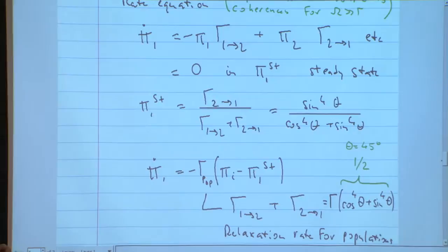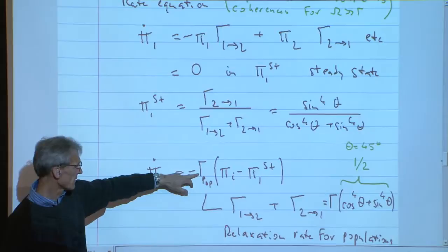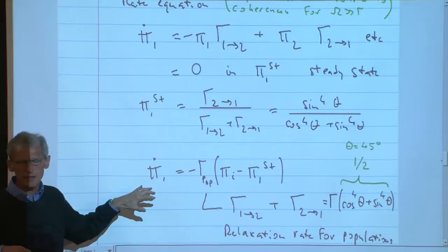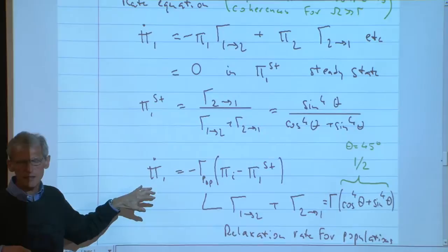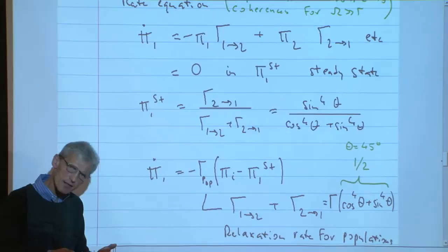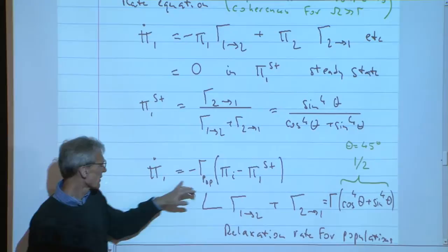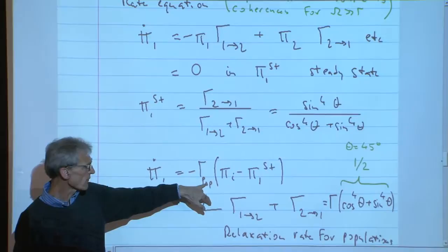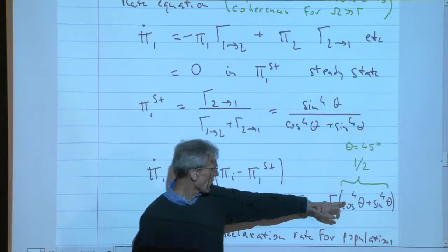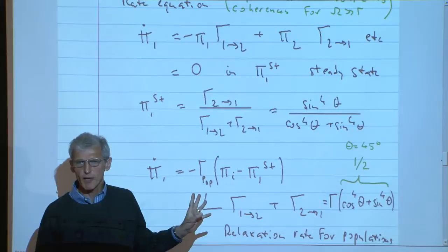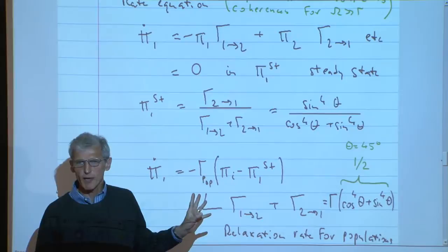The rate equations have a time constant — the relaxation time for populations — and we know exactly what it is. It's a little bit more complicated to find the equivalent equation for the coherences. But the density matrix in the dressed atom basis decouples into a simple equation for population and an equation for coherences. From these equations we have an expression for the relaxation time for coherences. As a non-trivial example: if you add cosine to the power 4 plus sine to the power 4, you get a factor of one-half, which will appear in an important place shortly.